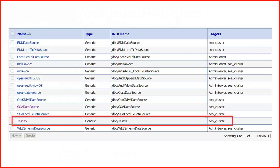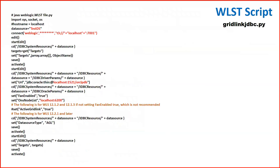Now we will see the process to convert a generic data source to an active grid link data source. As you can see on the screen, I have a data source named 'test_ds' which is a generic data source. To convert it to an active grid link data source, you have a single WLST script for the conversion. The parameters you need to update in this script are: the name of your data source (in my case 'test_ds'), a connect string with the admin username, password, and the URL of your admin server along with the port.